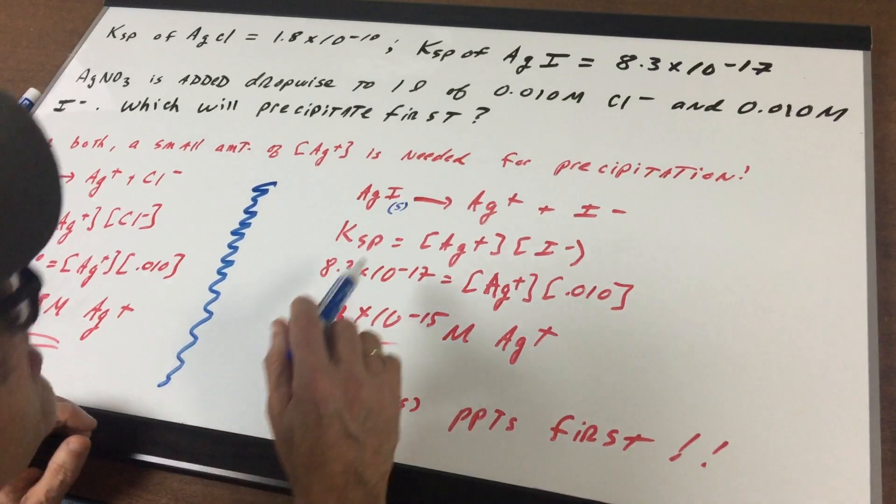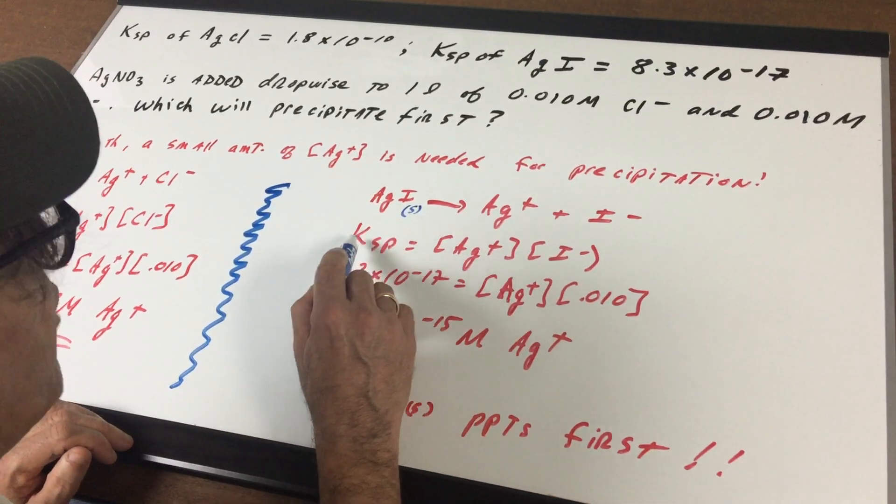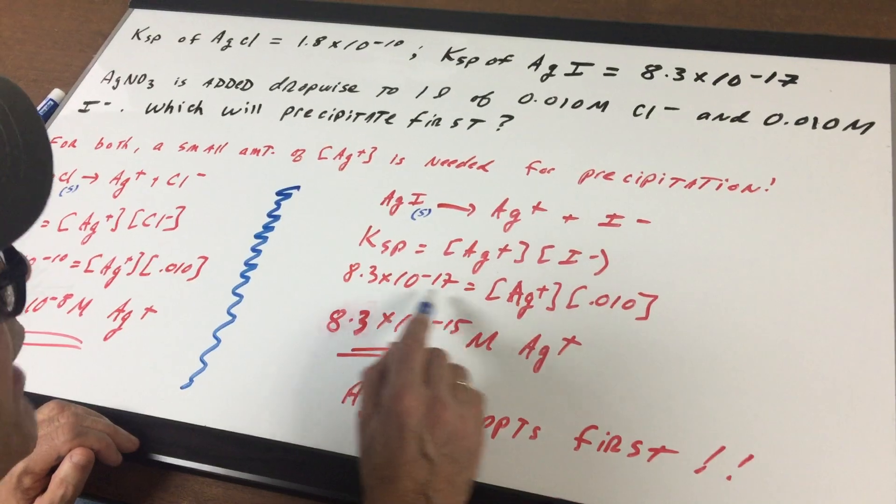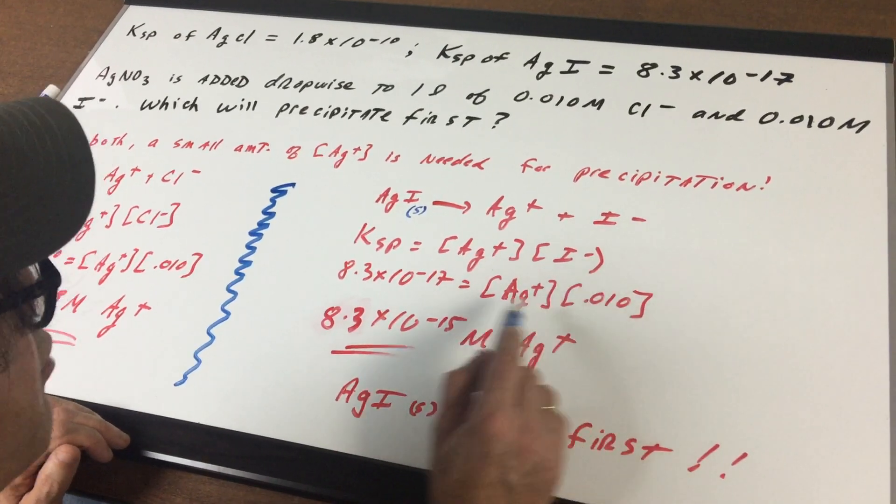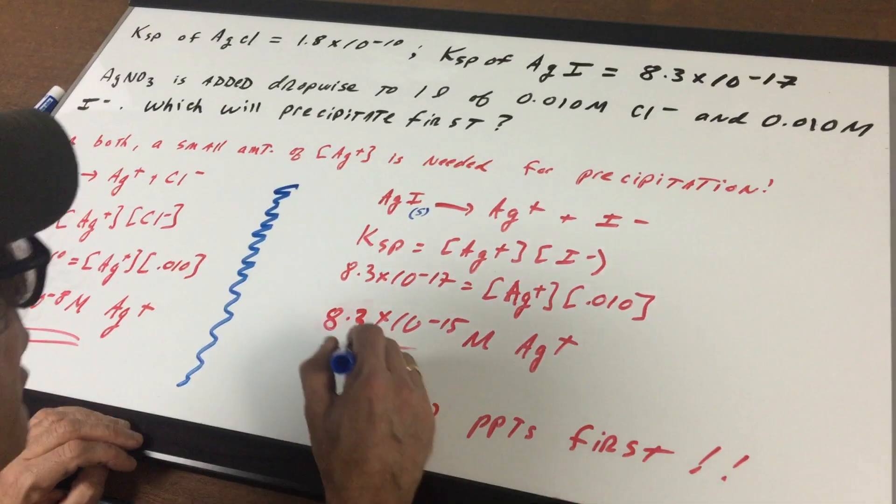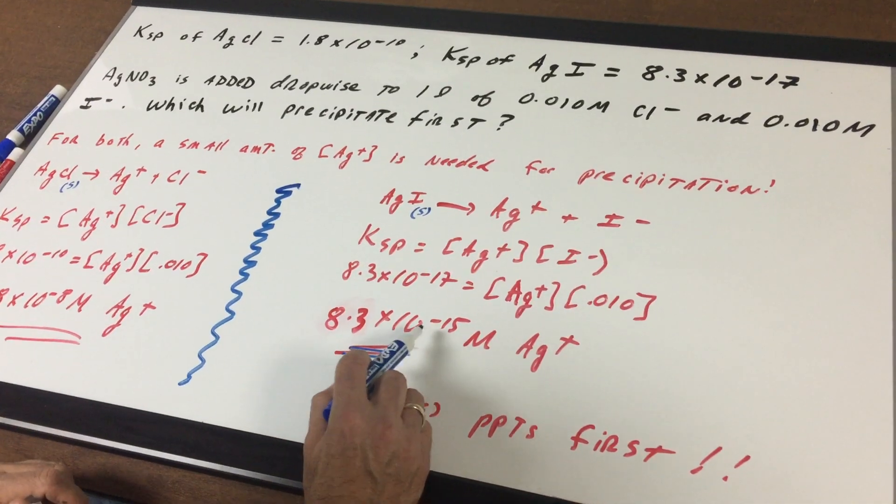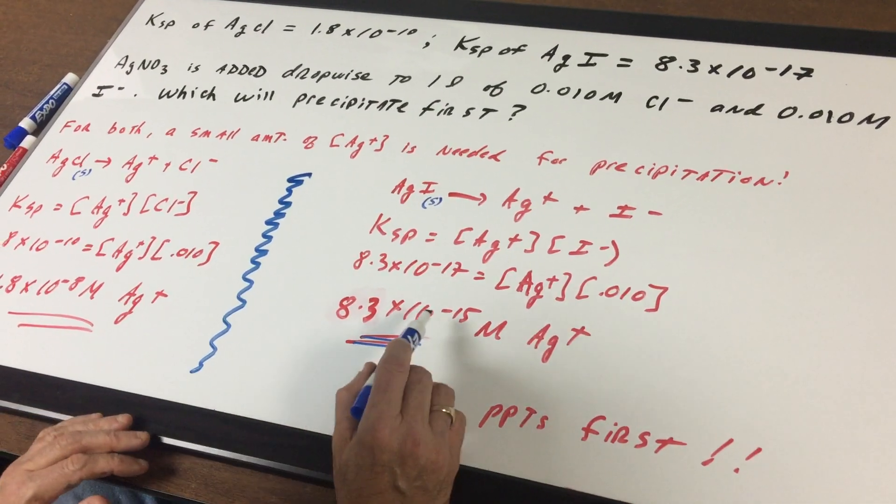Silver iodide is done in the same way. We know the KSP is 8.3 times 10^-17. We know the iodide, and we solve for the silver.